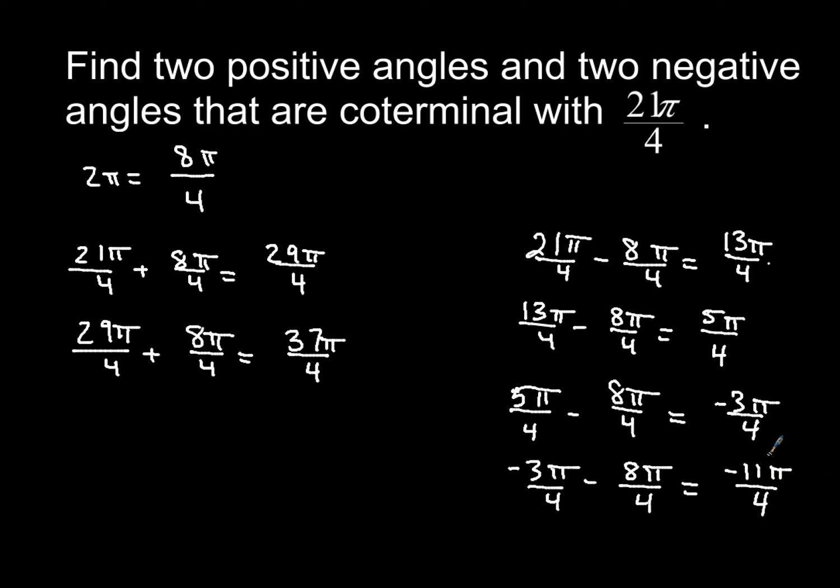So two positive coterminal angles, I got a whole bunch I could choose from. All right, I could choose the 29π over 4, the 37π over 4, or you could even go with a 13π over 4, or a 5π over 4. Any of those four would work for positive coterminal angles. But when I go to my negative coterminal angles, the first two that I came up with were negative 3π over 4 and negative 11π over 4.